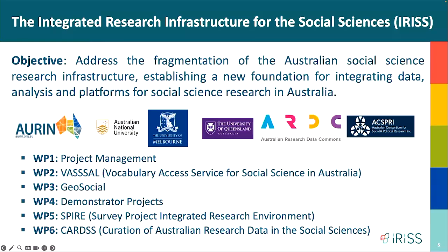In particular, in Australia we face some challenges every day but don't have enough tools to understand all these changes in real time. After a couple of years working with some universities and RDCs, the project Integrated Research Infrastructure for Social Sciences — IRIS — was created, with the idea to address the fragmentation of Australia's social science research infrastructure and create rapid tools to improve and help solve this problem. IRIS has six work packages with different approaches.